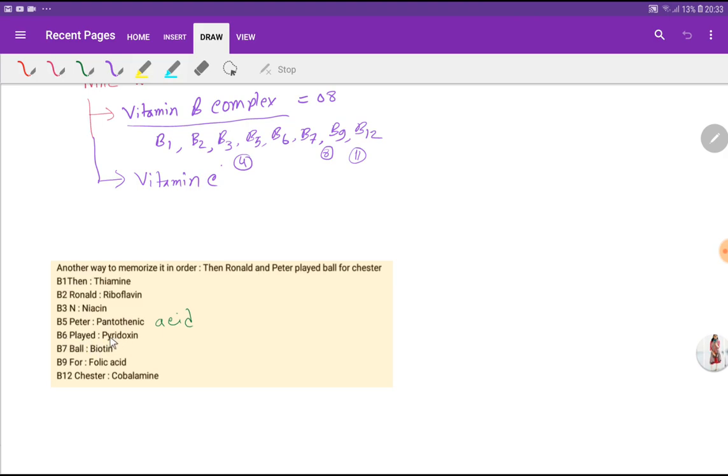'Ball' will take B7 biotin, 'for' will take B9 folic acid, and 'sister' will take B12 cobalamin.